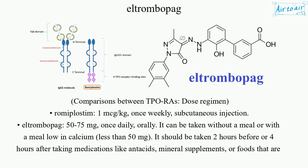Comparisons between TPO-RAs by dose regimen: romiplostim — 1 mcg per kilogram, once weekly, subcutaneous injection. Eltrombopag — 50–75 mg, once daily, orally. It can be taken without a meal or with a meal low in calcium (less than 50 mg).